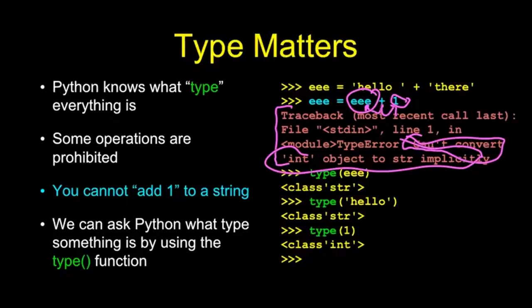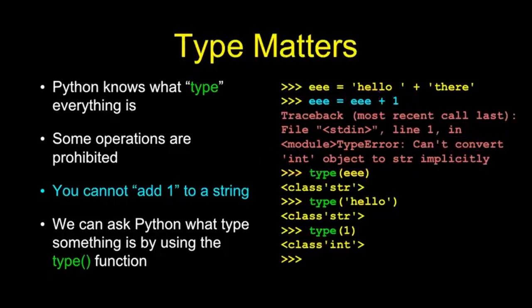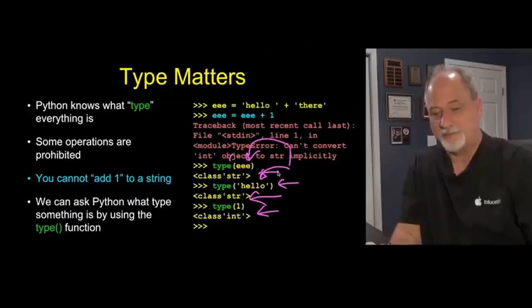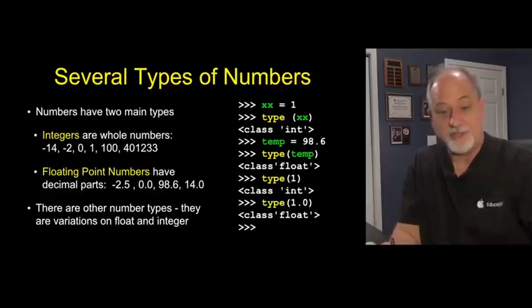If Python is so grumpy about types, then we should be able to ask it about types. So it turns out that there is, inside Python, a built-in function called type. So we can pass into type. The syntax is calling a built-in function named type. Parenthesis is the parameter we're passing to it. Tell me something about the type of the variable eee. And it says oh that would be of class string. We can pass in a constant and it says that's a string too. What about a one? Well that's an integer.